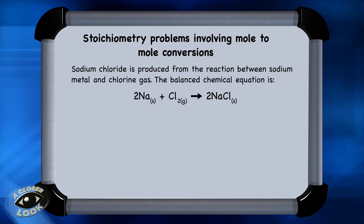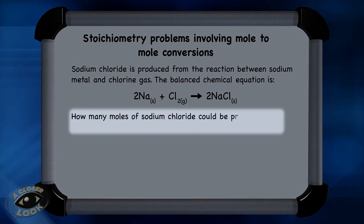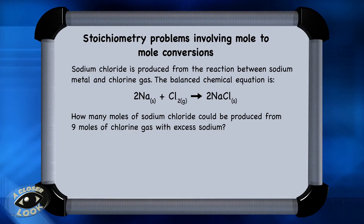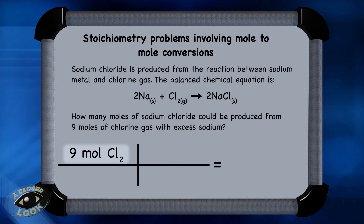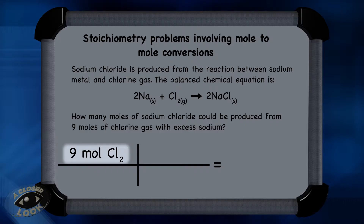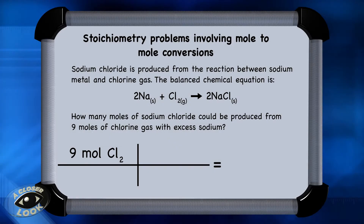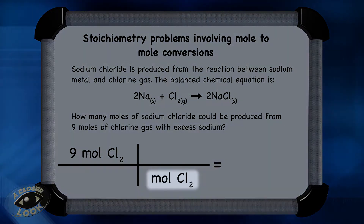This next problem involves the reaction of sodium metal and chlorine gas to form sodium chloride. The question asks how many moles of sodium chloride can be produced from 9 moles of chlorine gas with excess sodium. Start this problem like the other one — take what's given, which is 9 moles of chlorine gas, and put that in the upper left-hand corner of the conversion chart. Then bring the units down, putting moles of chlorine in the denominator of the next box.